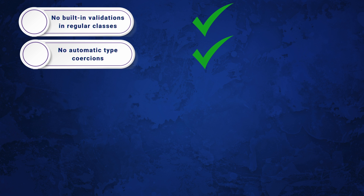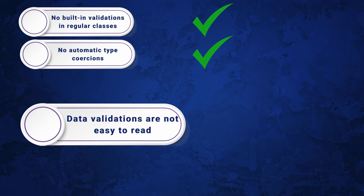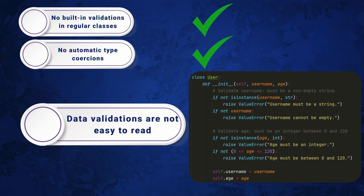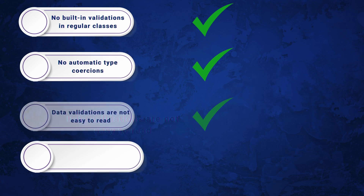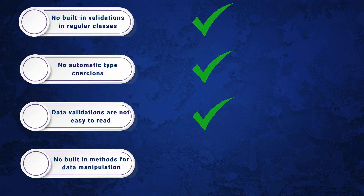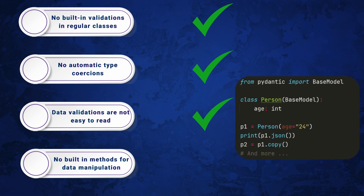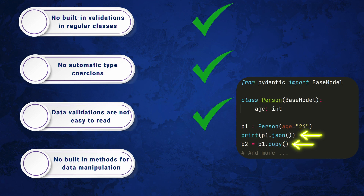Data validations are also harder to read within regular classes, because it requires writing a lot of if-statements inside your constructor, like in the example you see right now. And regular classes do not have built-in methods for data manipulation, whereas in Pydantic-based classes we have methods like JSON, copy, and much more useful methods for better management of your objects.